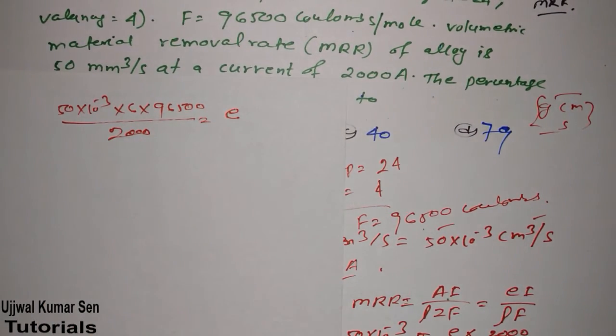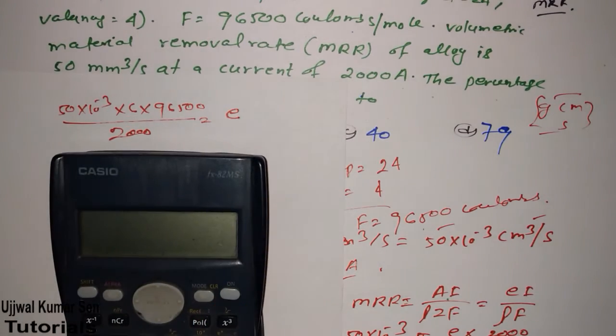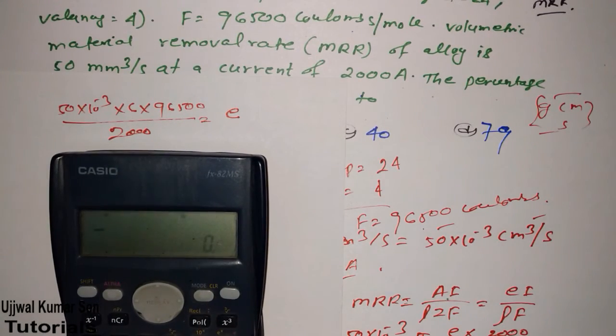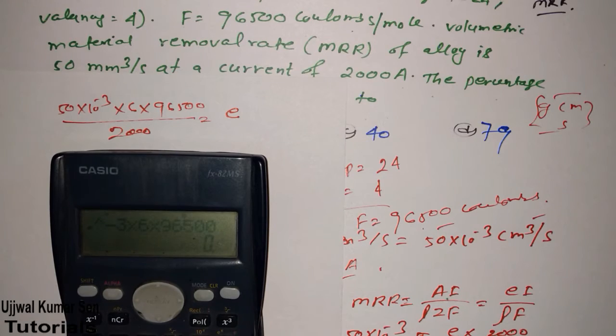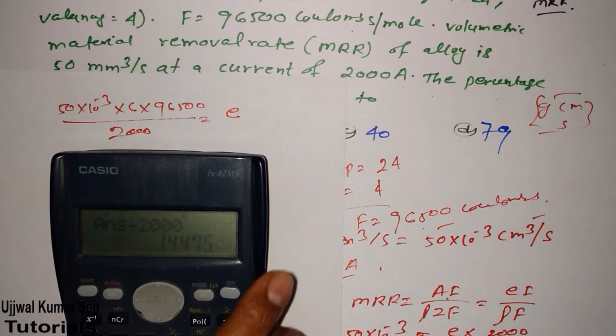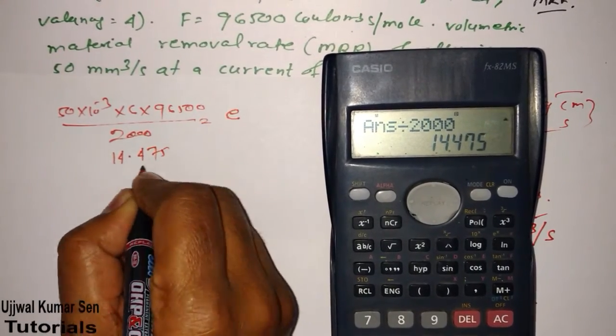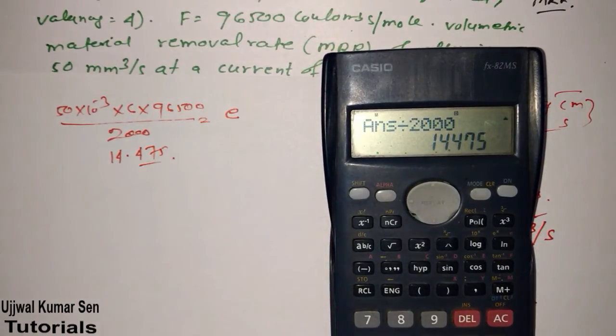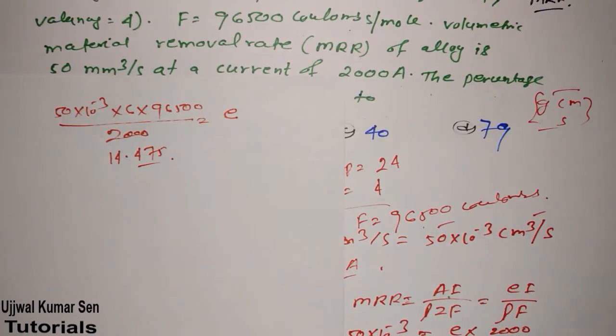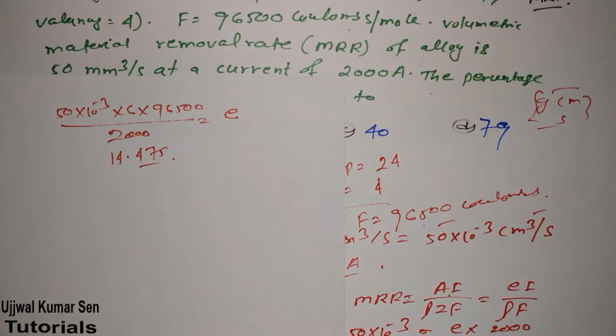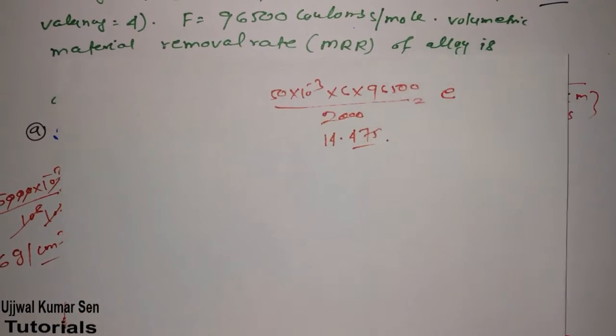What we got here, we can write 50 multiple 10 to the power minus 3 multiple 6 multiple 96500 divided by 2000 is equal to E. What is the value of E we need to find out? I need a calculator. 10 to the power minus 3 multiple 6 multiple 96500 divided 2000, it's 14.475 we are getting from this calculation. E is equal to 14.475. That is gram equivalent weight of the metal.